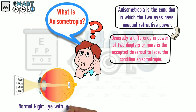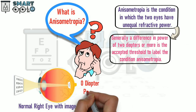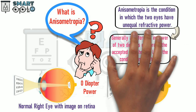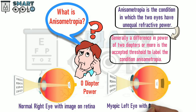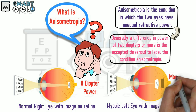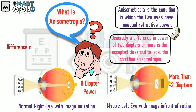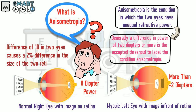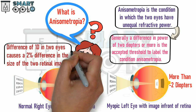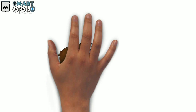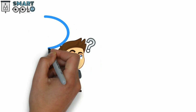This is a normal right eye with the image on the retina, and it has zero diopter power. This is a myopic left eye with the image in front of the retina — it has more than negative two diopters. A difference of one diopter in the two eyes causes a two percent difference in the size of the two retinal images.